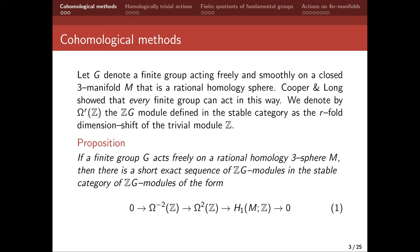Now, Cooper and Long proved that every finite group can act in this way. And I should say that this is in contrast to the classical situation for integral spheres — the big push of Smith theory and then the work of Swan and others is to characterize groups that can act freely on integral spheres. So now we're going to express the situation in terms of representation theory. I'm going to denote by Omega R of Z the ZG module — that's the integral group algebra — which is defined in the stable category of modules as the R-fold dimension shift of the trivial module Z.